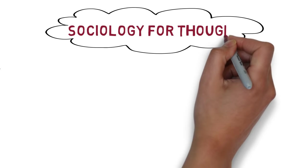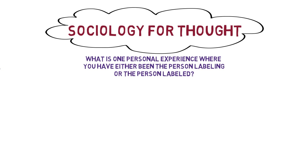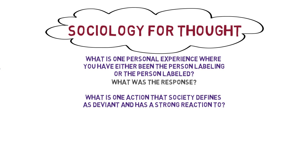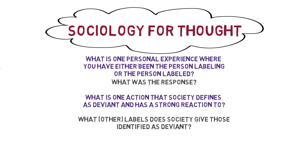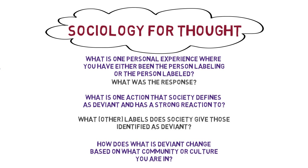So, what is one personal experience where you have either been the person labeling or the person labeled because an action was seen as deviant? How did the person respond to the label, or how did you respond? What is one action that society defines as deviant and has a strong reaction to? What labels does society give those that are labeled as deviant? And how does what is deviant change based on what community and culture you are in?